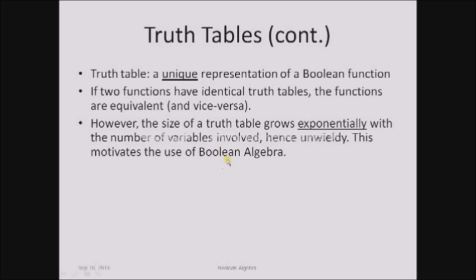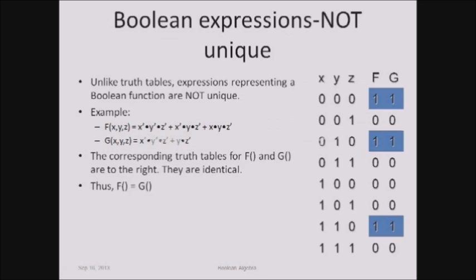Boolean expressions are not unique. Unlike truth tables, expressions representing a Boolean function are not unique. Two functions f and g may have different expressions but identical truth tables, in which case they are equivalent. Even though the expressions differ, we should not conclude the functions are different; since the truth tables are identical, f equals g.